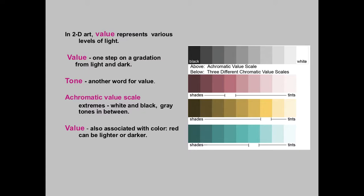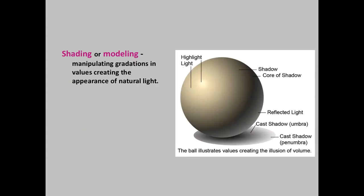When we think about how light is cast from a light source — for instance, where the sun or a light in a room is — for this type of exercise you would have a single light source. That's where the light would be hitting the object, and the highlight would be the strongest point where the light hits the object.